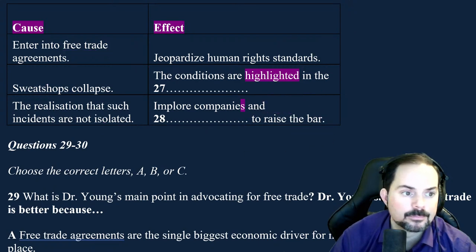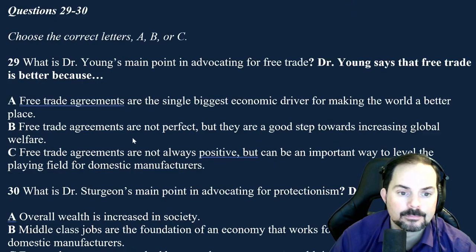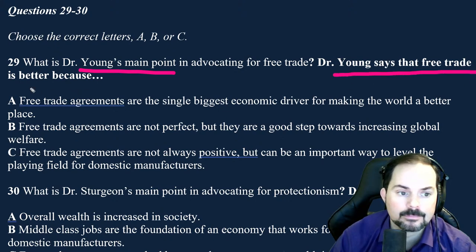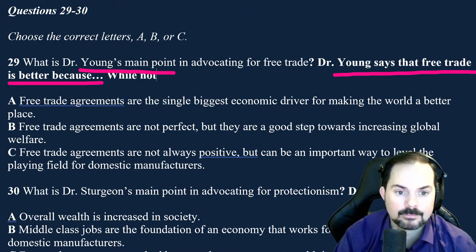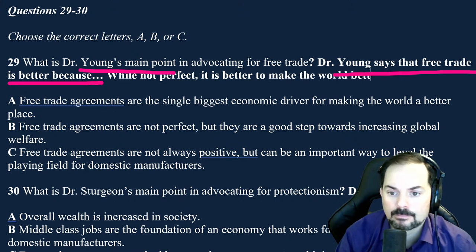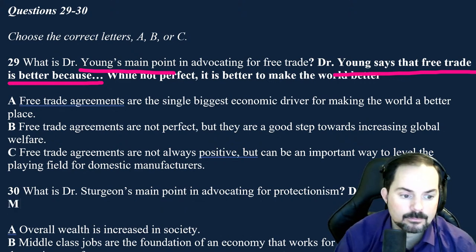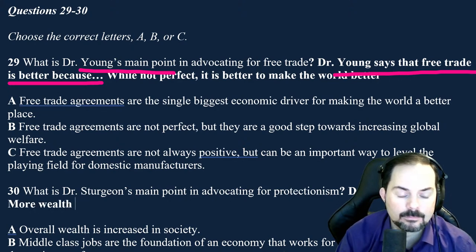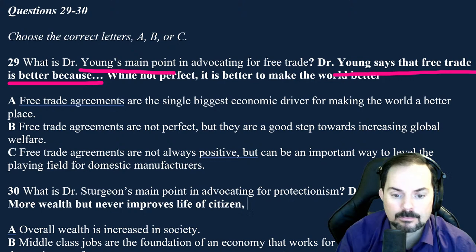I agree that human rights is an ongoing issue in free trade. Certain incidents, such as sweatshops collapsing and killing dozens of workers, have highlighted this issue in the media and public discourse — but these are isolated incidents. Hardly — these are not isolated at all. And even if such horrible incidents were rare, does it make the conditions those workers work in permissible? Do we excuse horrible working conditions as long as the workers don't die? That's an incredibly low bar, and one we must implore companies and governments to raise. That is the end of Section 3.